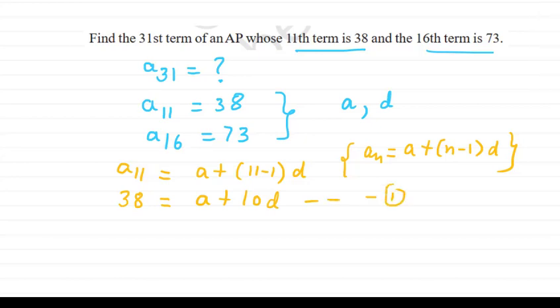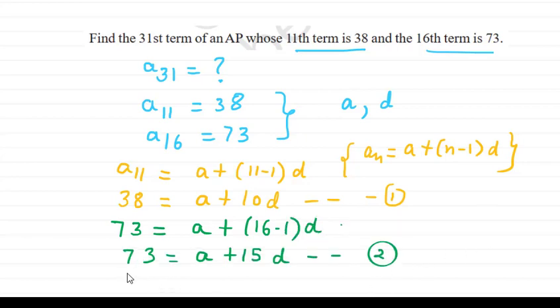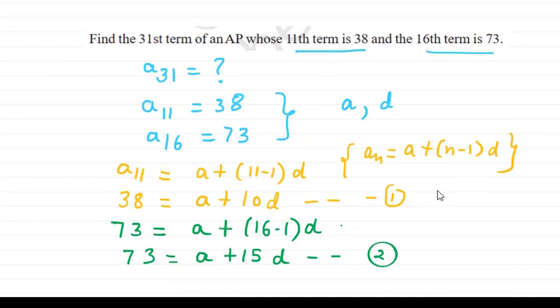Now the second equation we have A16, and A16 is 73. So you can write 73 equals to a plus 16 minus 1 into d. That will be 73 equals to a plus 15d. So now you have these two equations, equation number 1 and 2.